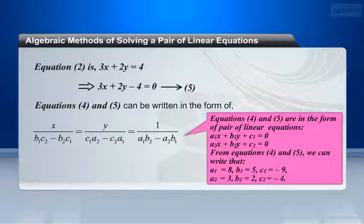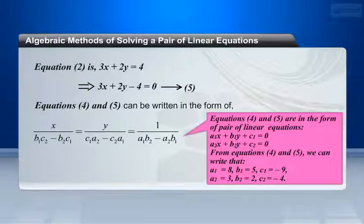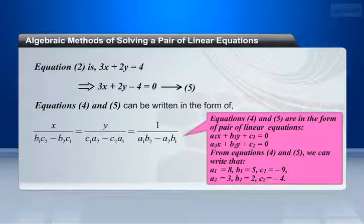Then we have: a1 equals 8, b1 equals 5, c1 equals minus 9, and a2 equals 3, b2 equals 2, c2 equals minus 4. We know that x divided by (b1·c2 minus b2·c1) equals y divided by (c1·a2 minus c2·a1) equals 1 divided by (a1·b2 minus a2·b1).